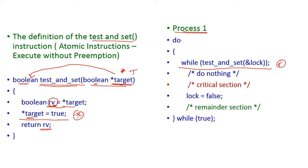If the target value is true, then the while condition is true and the control will continuously execute the while condition until it turns false. Until the result is false, this statement will execute continuously because it is ended by a semicolon. If it is initially false, then control will enter into the critical region; otherwise, it will do nothing. After completing the critical region, the lock will be set to false, and then the remainder section will be executed.